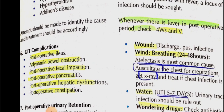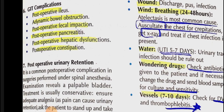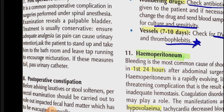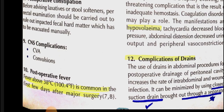Treat the underlying cause of confusion. GIT complications include post-operative ileus, bowel obstruction, fecal impaction, pancreatitis, hepatic dysfunction, and constipation. Post-operative urinary retention is a common complication especially after spinal anesthesia; management involves palpating the bladder and conservative management with adequate analgesia. If conservative measures fail, urinary catheterization is performed. For post-operative constipation, first do a per-rectal examination to check for fecal impaction; if impacted, manually evacuate, otherwise give laxatives or stool softeners. CNS complications include stroke and confusion.